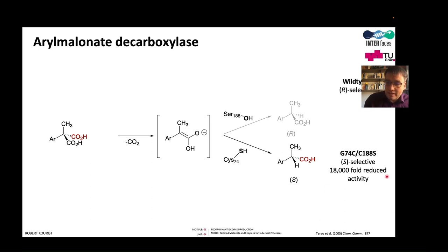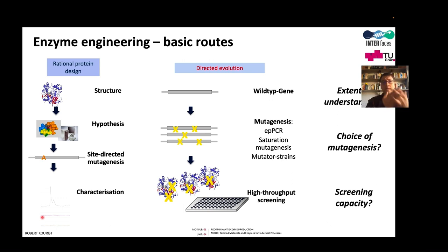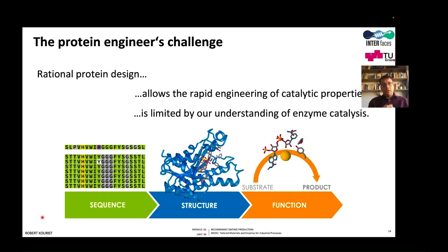The problem was that the S-selective variant had an 18,000-fold reduced activity — a classical problem in enzyme engineering. They did not anticipate that the cysteine also influenced activity. Selectivity was understood very well; activity was not. This is a typical case where one aspect was understood and another was not. Therefore, directed evolution presented itself as the method of choice to improve the activity. I will talk about this in the next video.